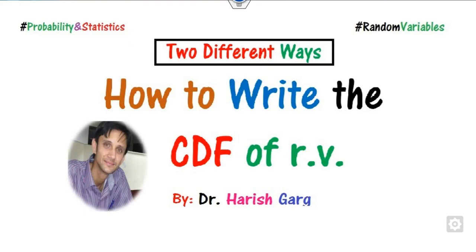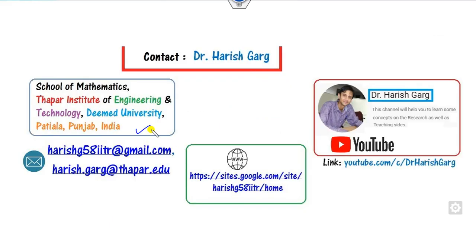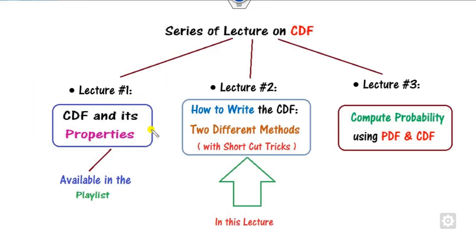Hello everyone, welcome to the next lecture on probability and statistics. Today we will discuss how you can write the CDF of a random variable. We will discuss two different methods: one is the general method and second the shortcut way. This is lecture number two related to the series of the CDF. You can watch the various properties of the CDF in our last lecture.